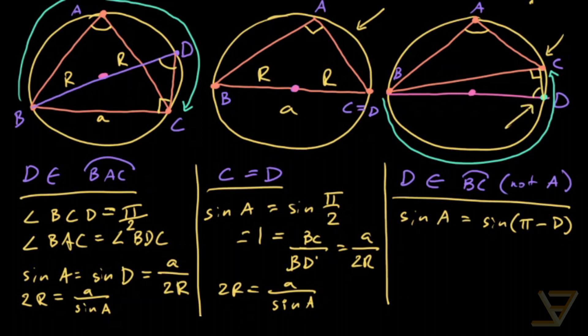And by a trig identity, that's equal to sine of D, and that's simply equal to, because we have a 90 degree triangle here, A over 2R. So once again, we have 2R is equal to A over sine of A.